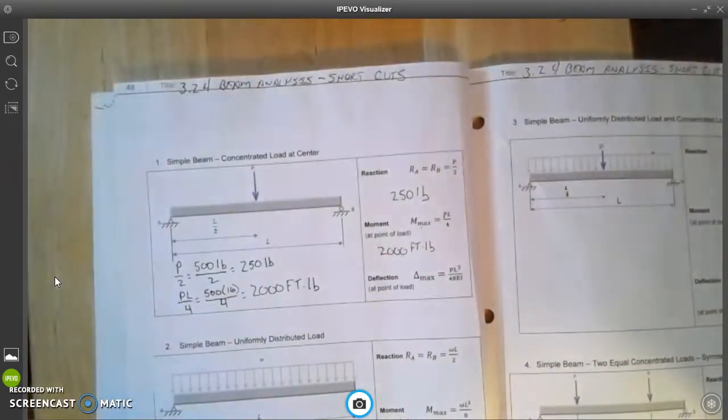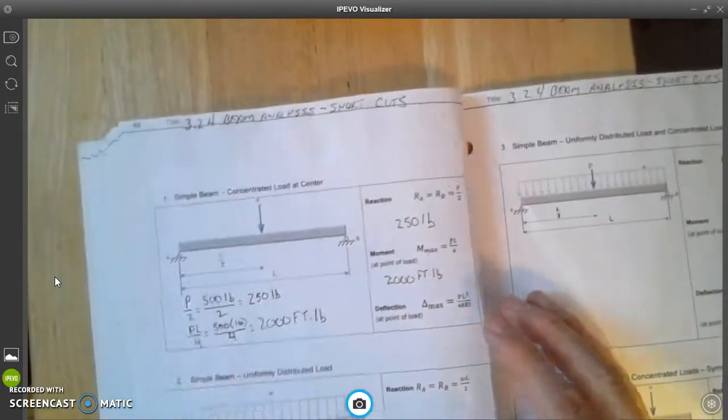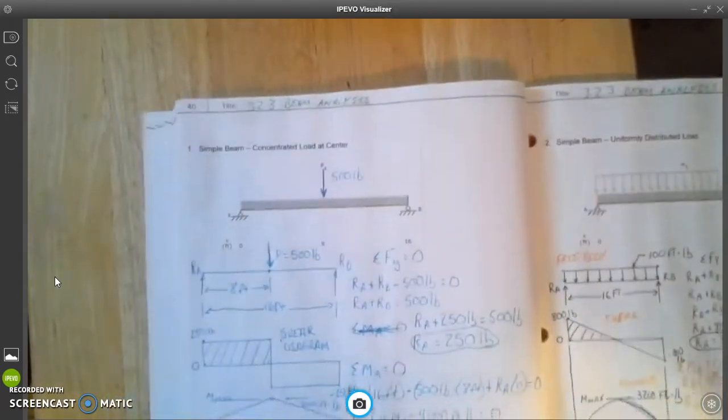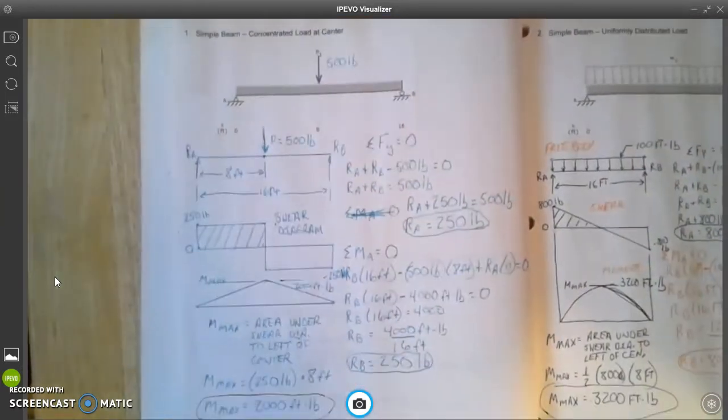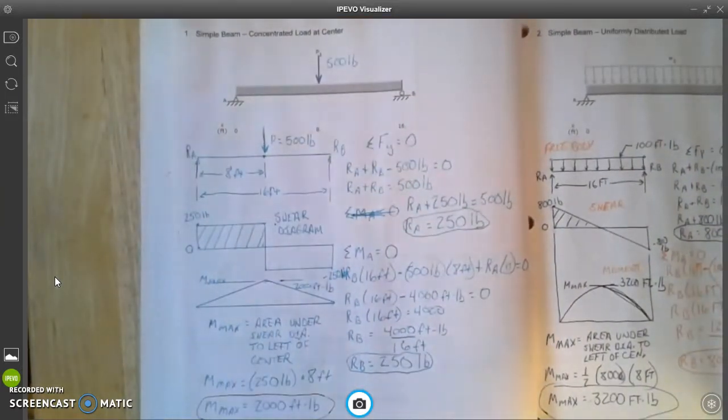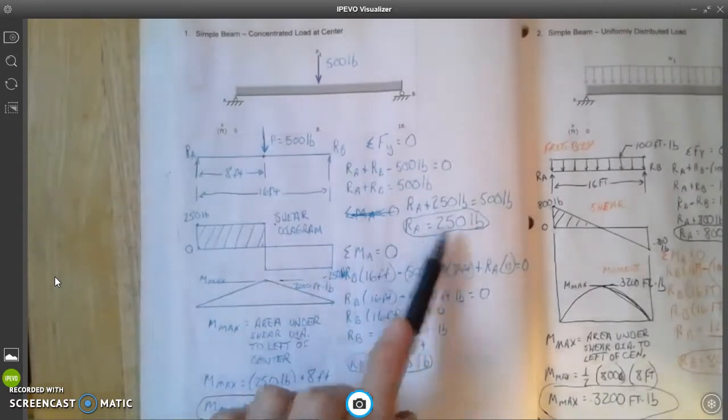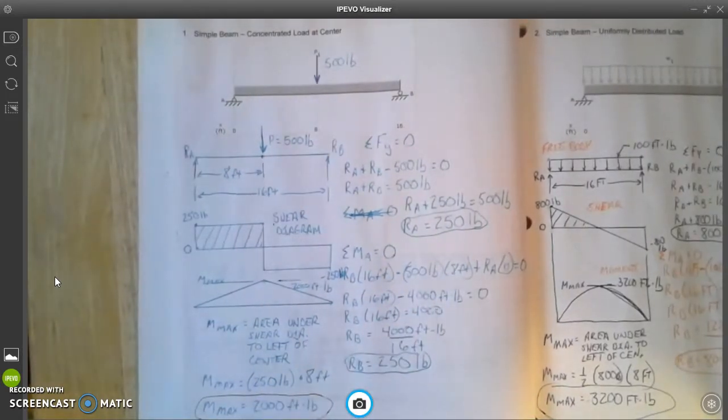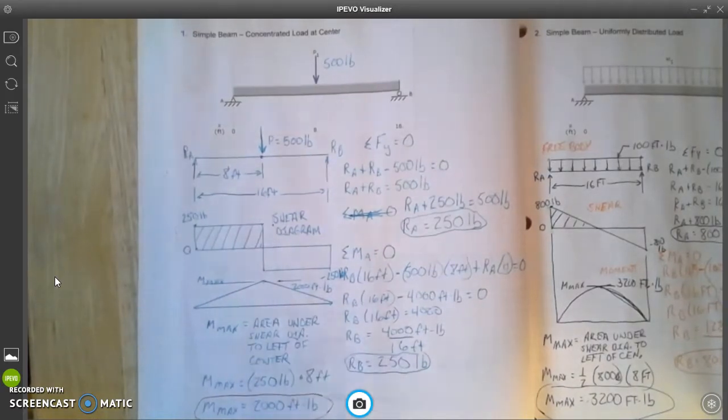And now you can check this by going back to our calculations of our simple beam. This is mine right here, and you can see that my reaction force is 250 pounds and my moment max is 2,000 foot-pounds, right here.